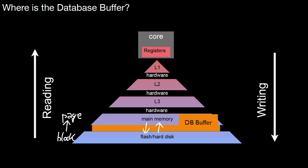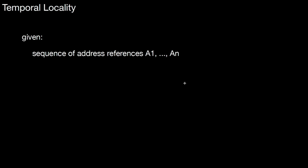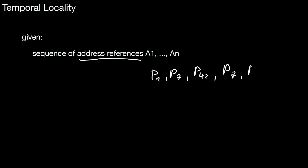Two concepts important to understand in the context of the database buffer — and any other caching mechanism — are temporal and spatial locality. Let's start with temporal locality. Given a sequence of address references A1 to AN, in the general case these may mean any arbitrary address, but there are usually granularities. If we talk about hard disks, we can only refer to certain pages or blocks. So a reference sequence might look like: page 1, page 7, page 42, page 7 again, page 2, and so forth.